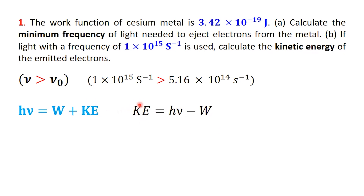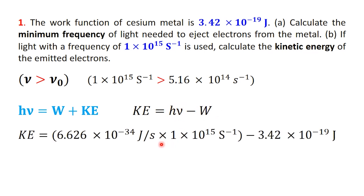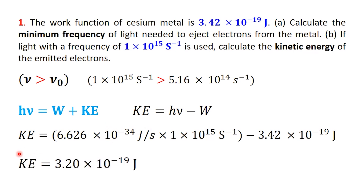Rearranging the equation for kinetic energy gives: kinetic energy equals h nu minus w. Now we substitute the values. Planck's constant h is 6.626 times 10 to the power of minus 34 joule seconds, multiplied by the light frequency 1 times 10 to the power of 15 per second, then subtract the work function 3.42 times 10 to the power of minus 19 joules. Doing the math, we get 3.20 times 10 to the power of minus 19 joules. So the maximum kinetic energy of the ejected electrons is about 3.20 times 10 to the power of minus 19 joules.